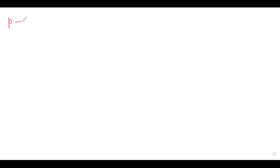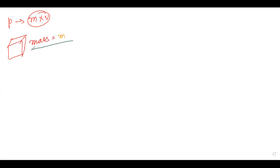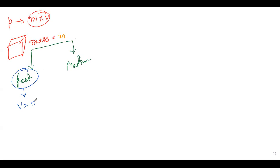Momentum is the product of mass and velocity. If a body has a certain mass M, it can be in two situations: at rest or in motion. If at rest, the velocity is zero, and even though mass is present, the momentum will be zero — M into zero is zero. But when the body is in motion, it will have some velocity greater than zero, and that is where momentum exists.